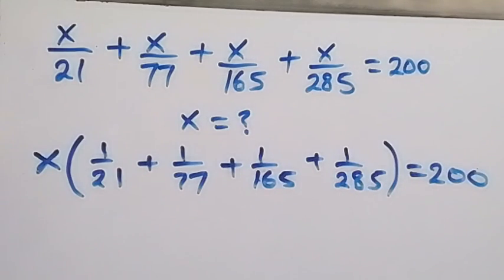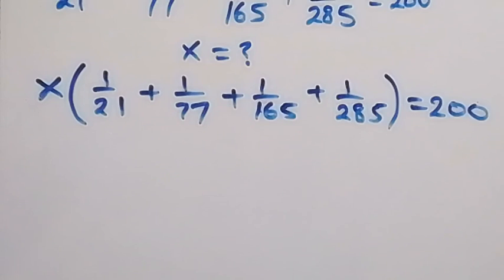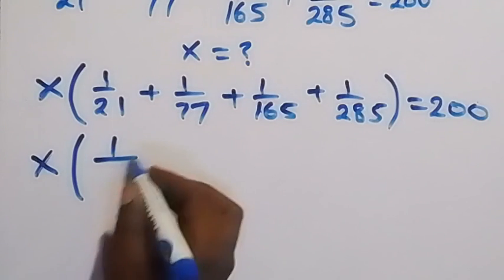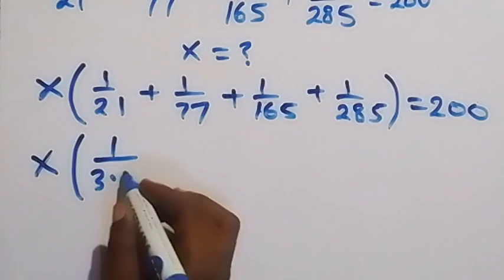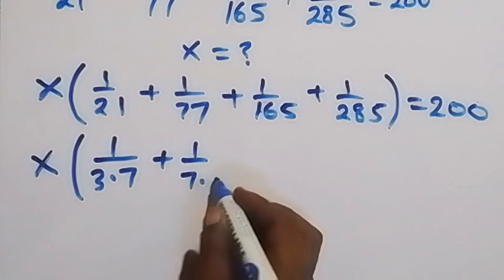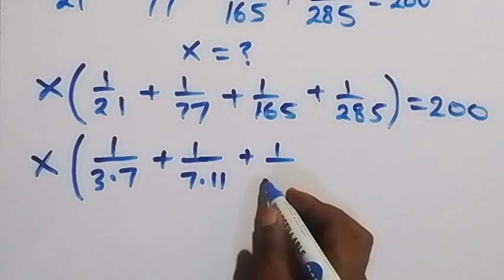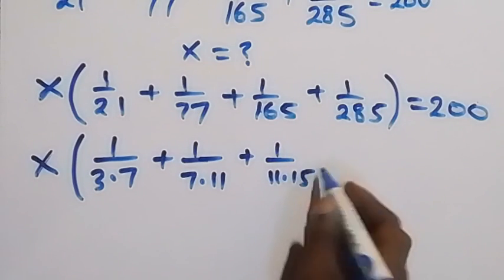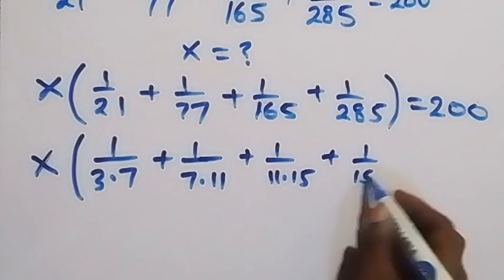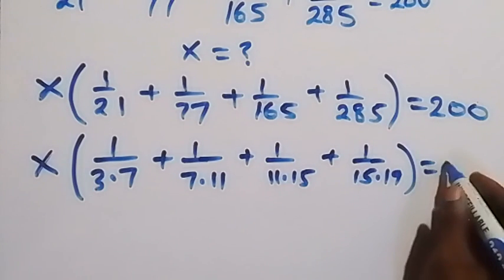And from here, we can factor everything in the denominator. We factor it and this gives us x into bracket: 1 over 21 written as 3 times 7, then plus 1 over 77 written as 7 times 11, then plus 1 over 165 written as 11 times 15, then plus 1 over 285 written as 15 times 19. Then close bracket equals to 200.